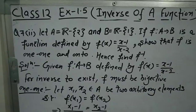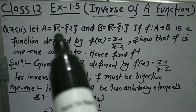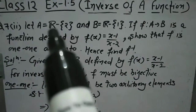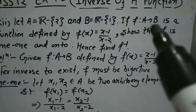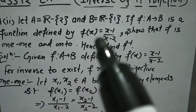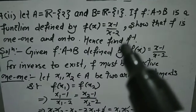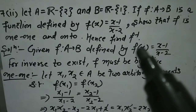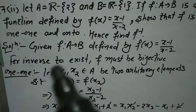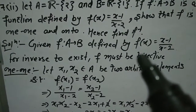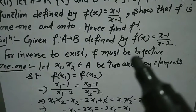Now we will do question number 7, second part. Let A = R - {2}, meaning all real numbers with only 2 removed, and B = R - {1}. f is a function from A to B defined by f(x) = (x-1)/(x-2). We need to show that f is one-one and onto, and hence find f inverse. Given: f from A to B defined as f(x) = (x-1)/(x-2). For inverse to exist, f must be bijective.